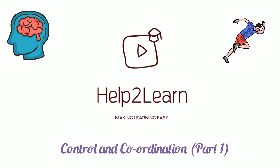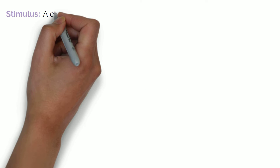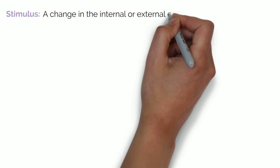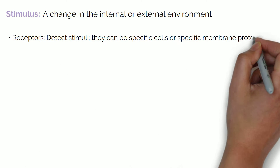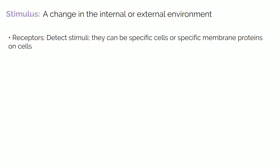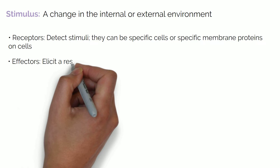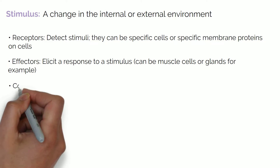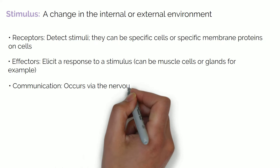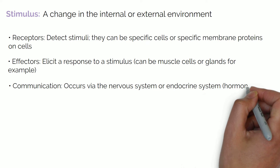Our survival and safety depend on the ability to sense and respond to external environments which may be harmful, such as extreme cold or extreme heat. A change in the internal or external environment is known as a stimulus. Receptors detect stimuli — they can be specific cells or specific membrane proteins on cells. Effectors elicit a response to a stimulus, such as muscle cells or glands. Communication can occur via the nervous system or endocrine system involving hormones.